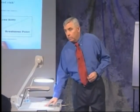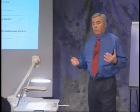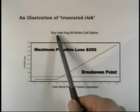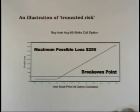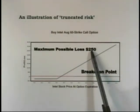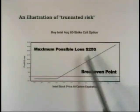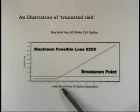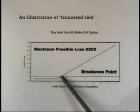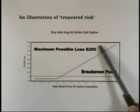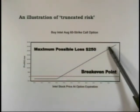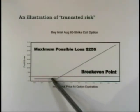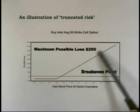Here's an example of buying a call option with truncated or limited risk. This example is buying an Intel August 60 strike call at two and a half points, or $250. If you buy the 60 strike and pay two and a half points, your break-even is going to be around 62.50. Once Intel moves above 62.50, you start realizing profits. If Intel goes down, the most you can lose is $250. There's a price graph showing your limited risk.